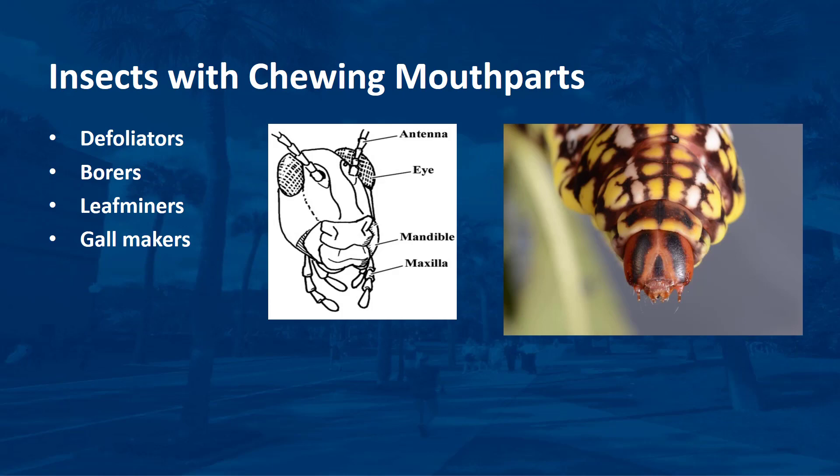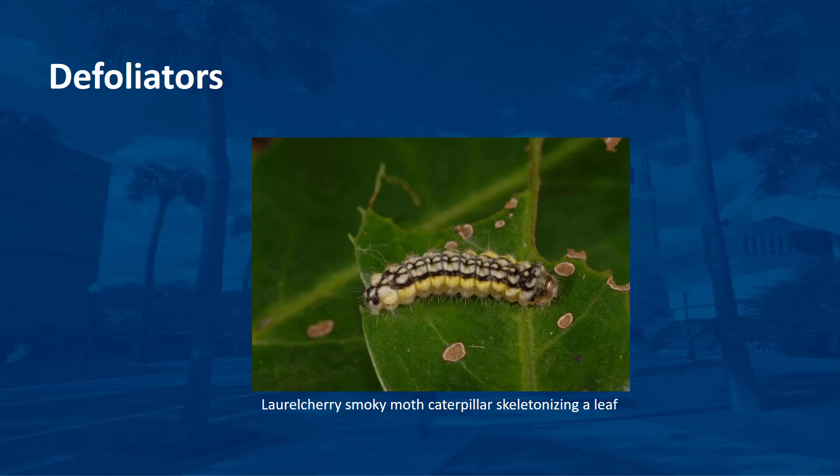Caterpillars, beetles, beetle larvae, sawfly larvae, grasshoppers, and others have chewing mouthparts. The immature larvae are usually the most damaging; however, adults may also feed. These insects may feed almost anywhere on the plants. Larvae are the most active feeding stage of the insects. Most larvae appear as worms with segments and legs. Chewing insects are divided into defoliators, borers, leaf miners, and gall makers.